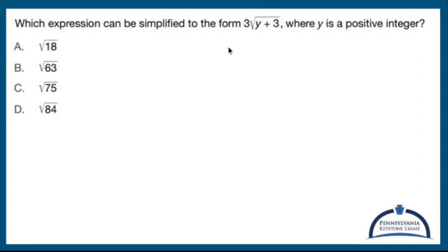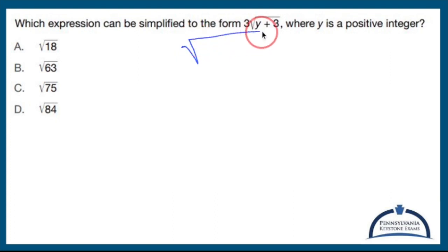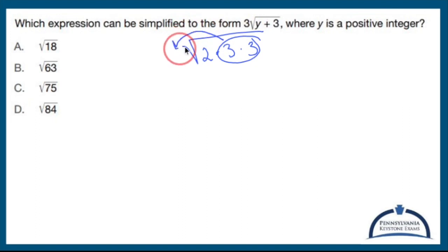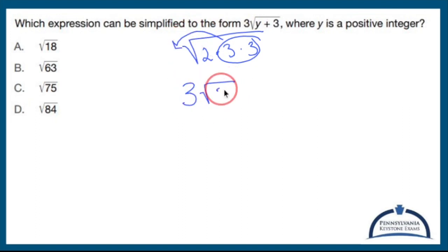If I look at problem A, I would take 18 and say, 18 is the same thing as 2 times 3 times 3. Now, 2 times 3 times 3 under the square root means I can bring out one set of 3s, and that leaves me with 3 times the square root of 2.